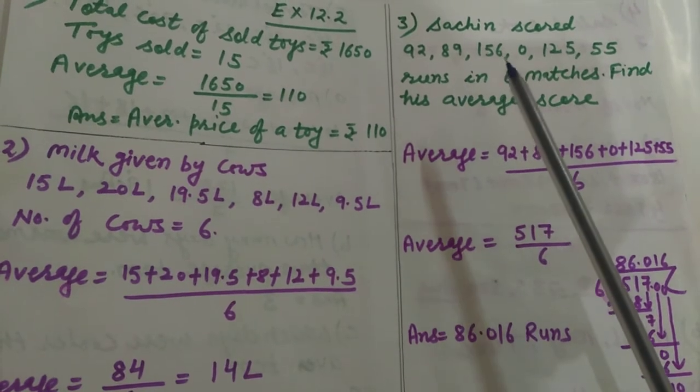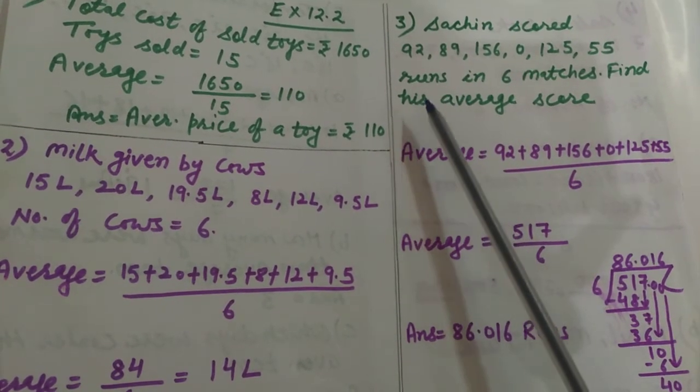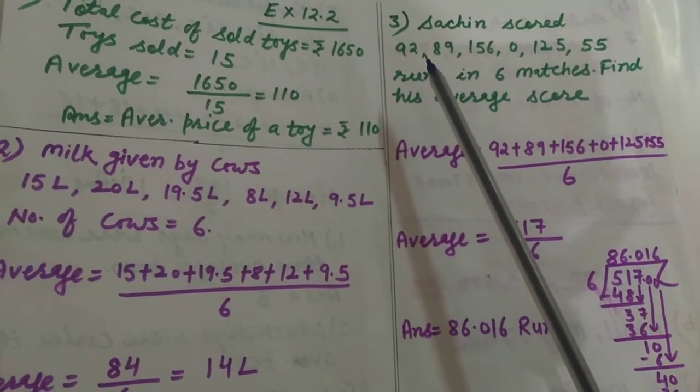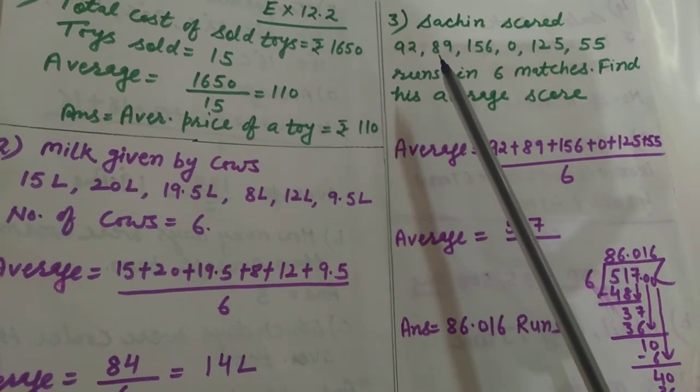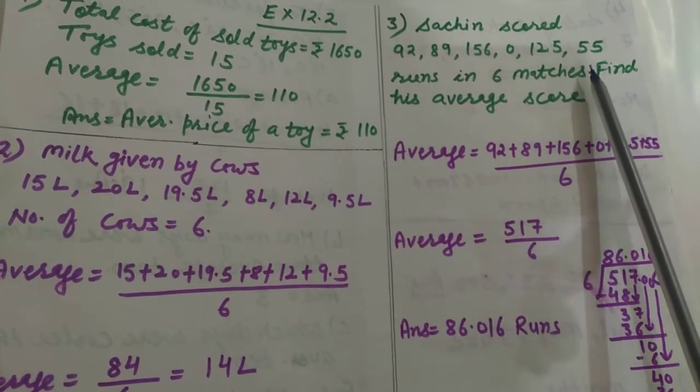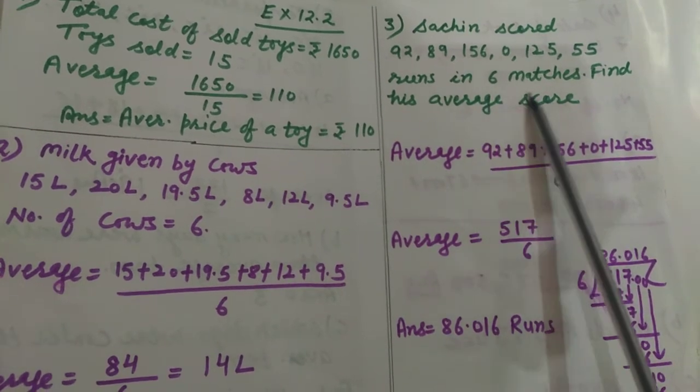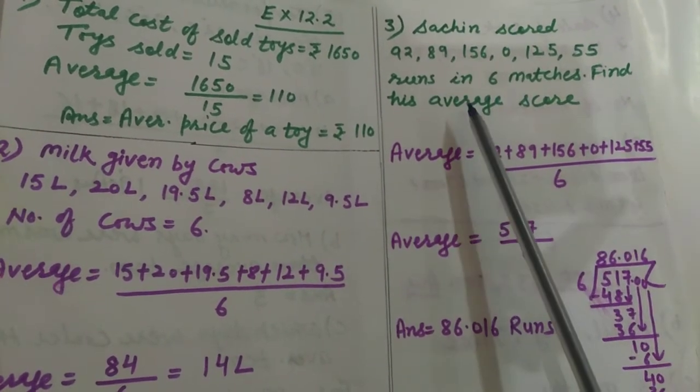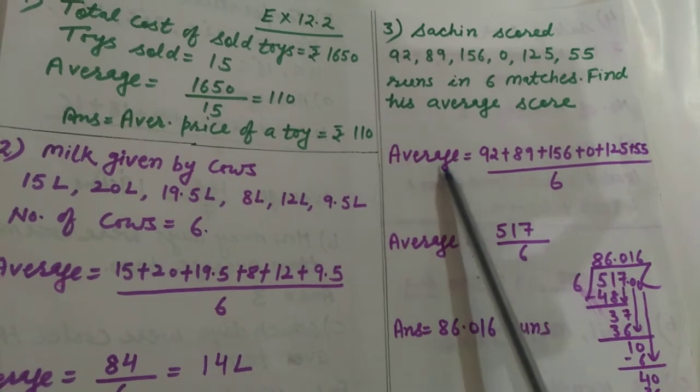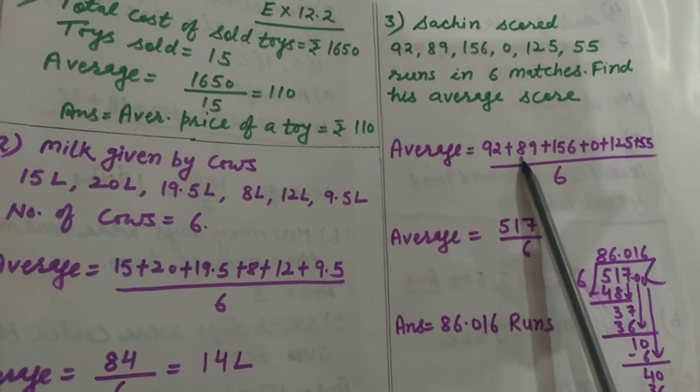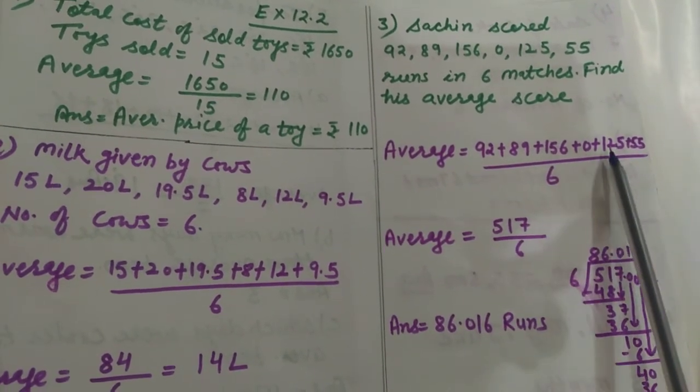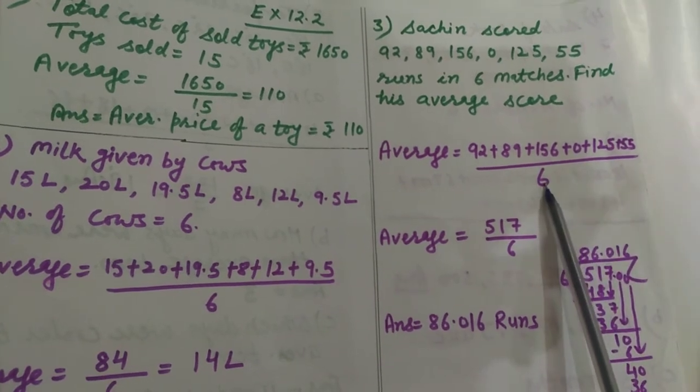After that question number 3. Sachin scored in a match. Runs are given here: 92, 89, 156, 0, 125 and 55. Runs in 6 matches. You have to find his average score. So average will be 92, 89, 156, 0, 125 and 55, upon 6.